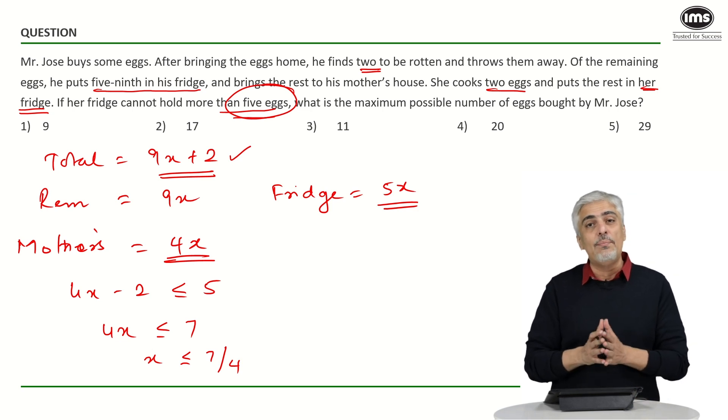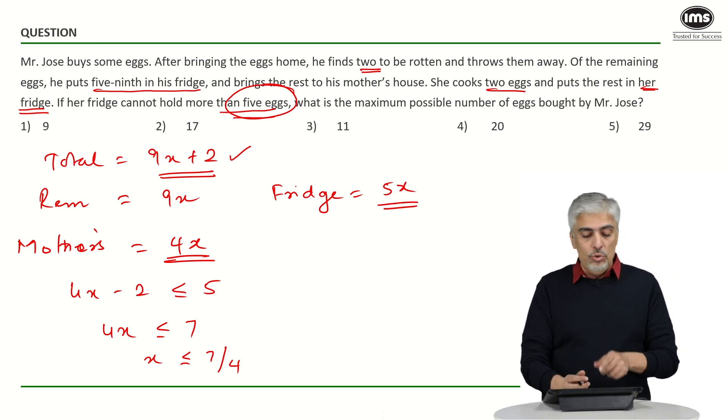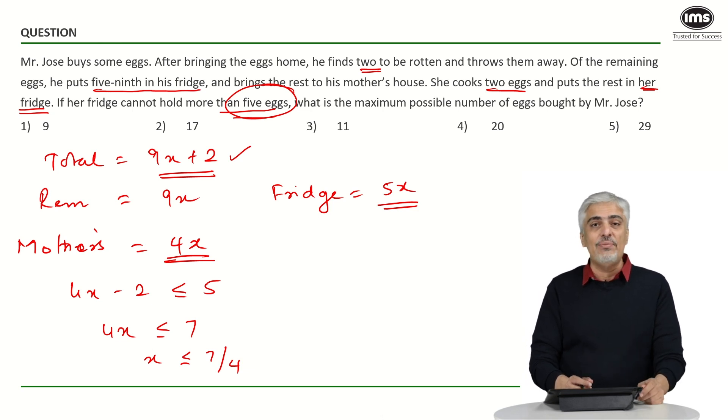Now understand we are talking about number of eggs. So the value of x cannot be a decimal value. So x has to be less than 7 by 4. 7 by 4 is 1 point something. Now if it is less than 1 point something, the only possible value for x will be 1.